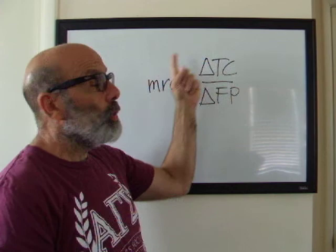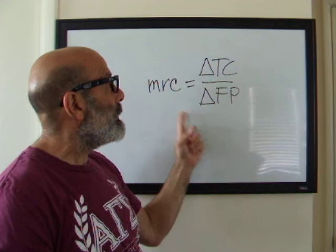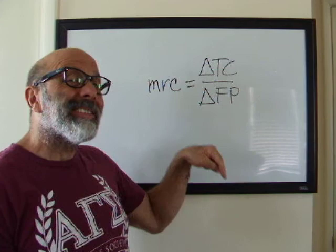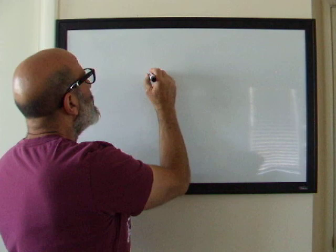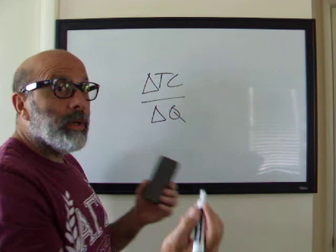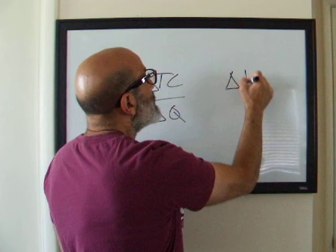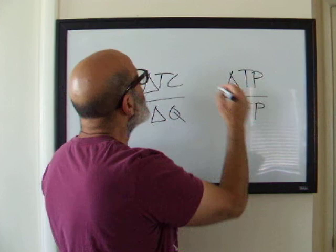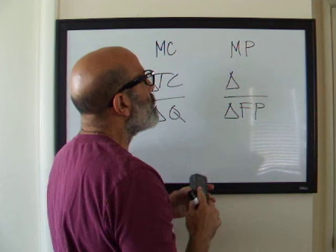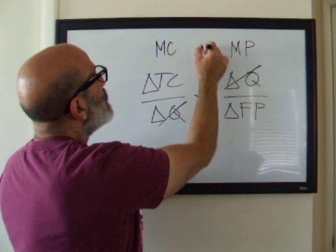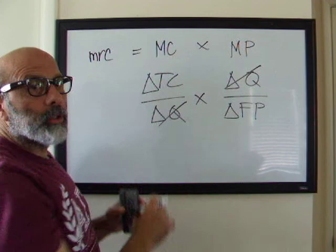Looking at the numerator, we have the change in total cost — that's the same numerator as in marginal cost. And the denominator is the change in the factor of production, the same denominator as in marginal physical product. So we can write: marginal cost is ΔTC/ΔQ, and marginal product is ΔTP/ΔFactor. Since total product is just another way of saying quantity, we can cancel, and marginal cost times marginal product equals your marginal resource cost.